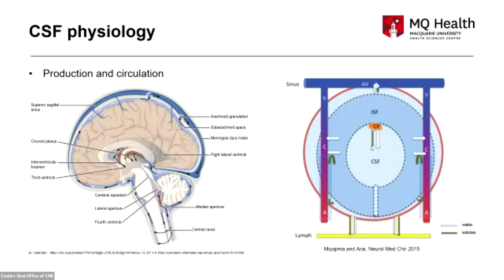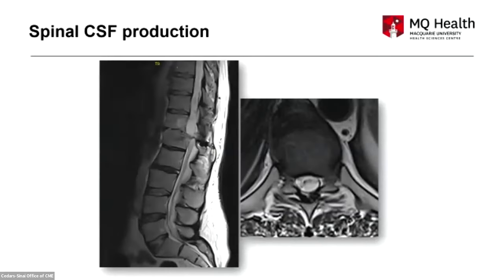CSF is produced by the choroid plexus, but there's also a lot of fluid exchange between the parenchyma and blood vessels throughout the brain and spinal cord, with lymphatic and dural involvement. This has been summarized as CSF being produced and absorbed everywhere, which I think is a reasonable way to think about the more complex aspects of CSF physiology. Here is a clinical example that demonstrates that point.